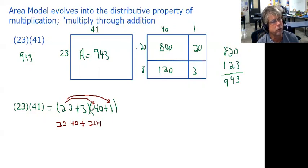And then we turn to the 3 and we distribute the 3 through both of those addition pieces. So the 3 takes its turn through the 40 and the 1. So 3 times 40 comes into the problem, and 3 times 1 comes into the problem.